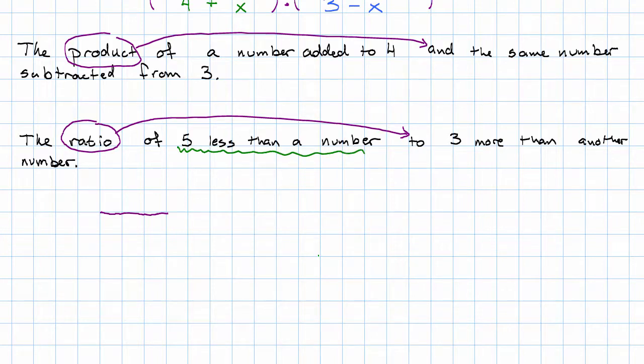The first quantity described is five less than a number. So that's going to be x minus five. Remember that less than phrasing reverses the order. The second expression described is three more than another number. Another number means use a different letter. This might be a different number than the first, but say y plus three. More than also reverses the order, but that's not such a big deal because order doesn't really matter in addition.